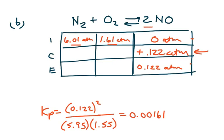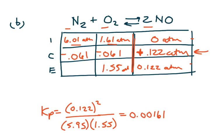The change row must match the 2-to-1-to-1 stoichiometry — that's the only row that follows the ratio. If we made 0.122 atm of NO, then the change for N₂ and O₂ is half of that, which is 0.061. And since we're making NO, we're using up N₂ and O₂, so their changes are negative. So 1.61 minus 0.061 gives 1.55 atm for N₂, and 6.01 minus 0.061 gives 5.95 atm for O₂.